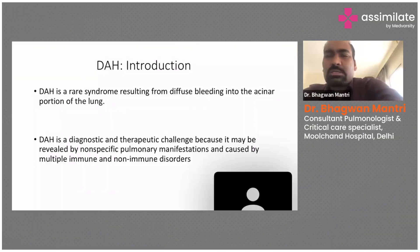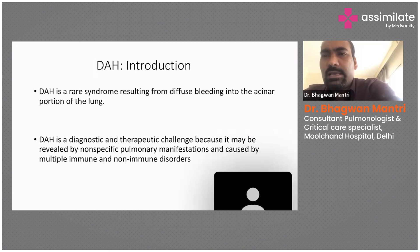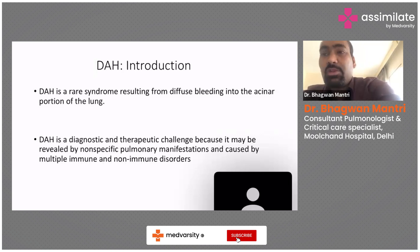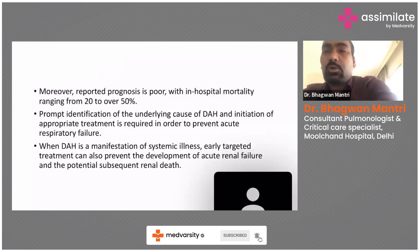Starting with a simple introduction — as the name suggests, diffuse alveolar hemorrhage means bleeding in the alveoli, in the acinar portion of the lung. The patient will not directly report bleeding in the lung, which is why DAH is a very significant therapeutic challenge. The presentation symptoms are similar to any other respiratory disease, and it may be caused by various immunological or non-immunological diseases. We need to identify the etiology because the treatment differs depending on the underlying cause of DAH.